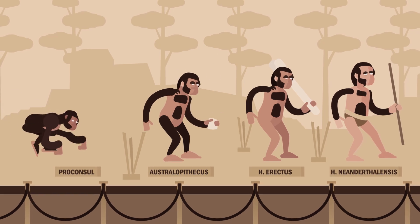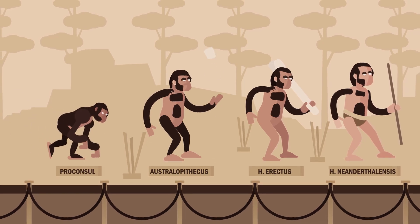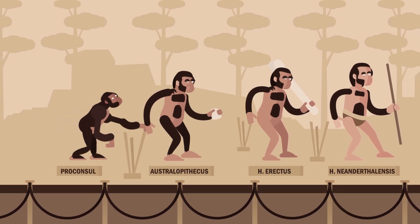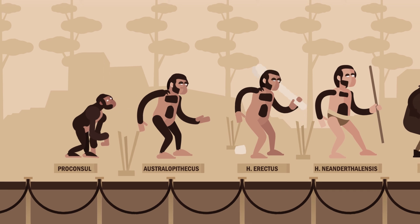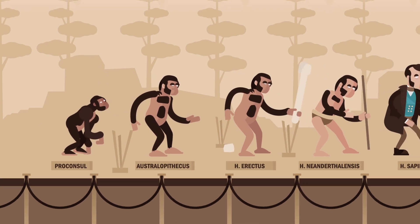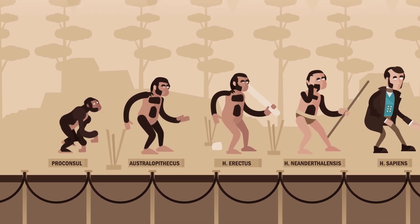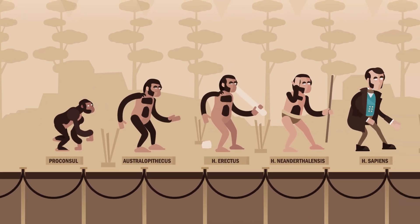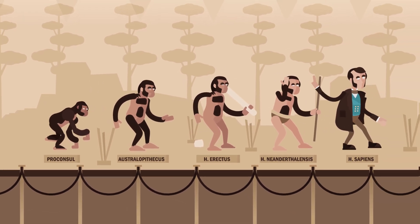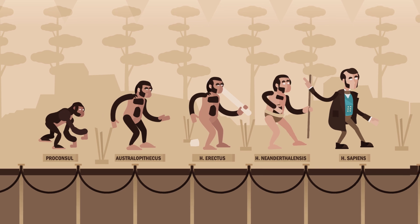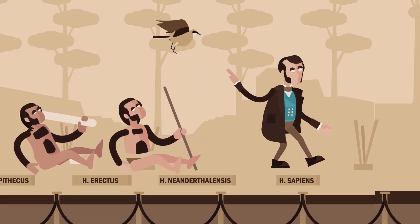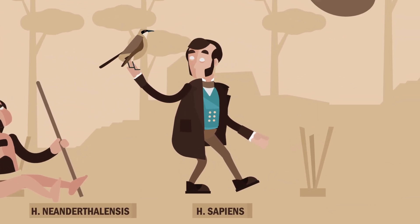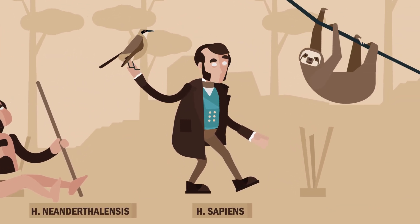There have always been people who find evolution hard to believe, although it's more than thoroughly proven. At first, not even Darwin could believe it. So how did he come to write and publish one of the most important and controversial theories in science history?